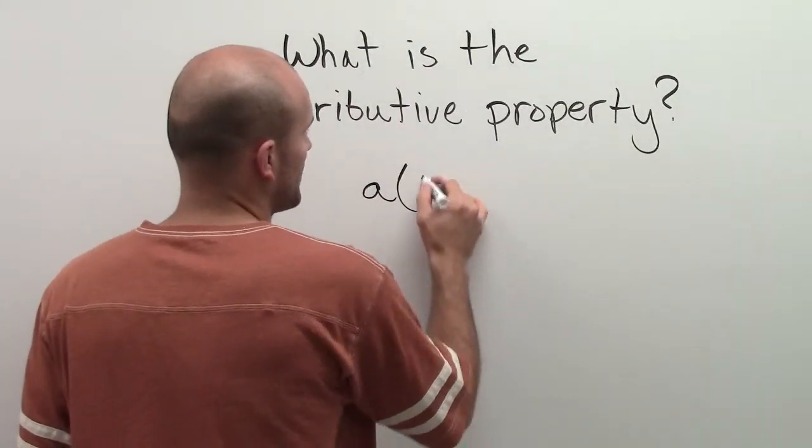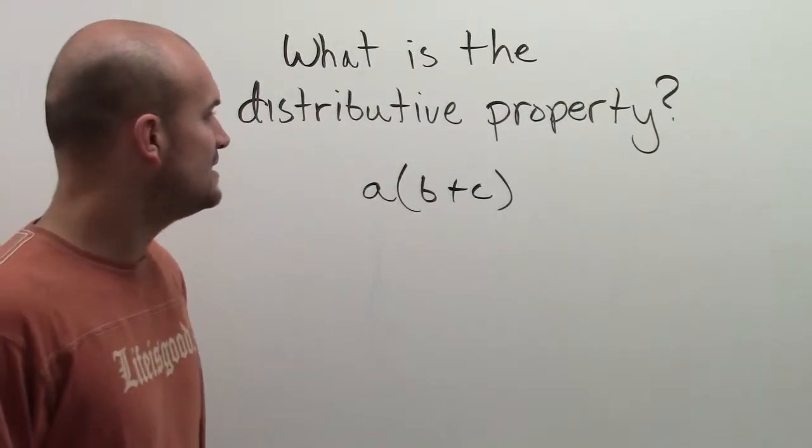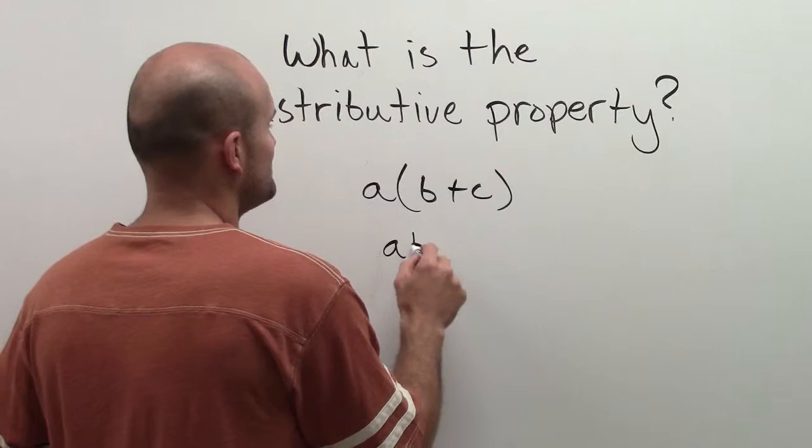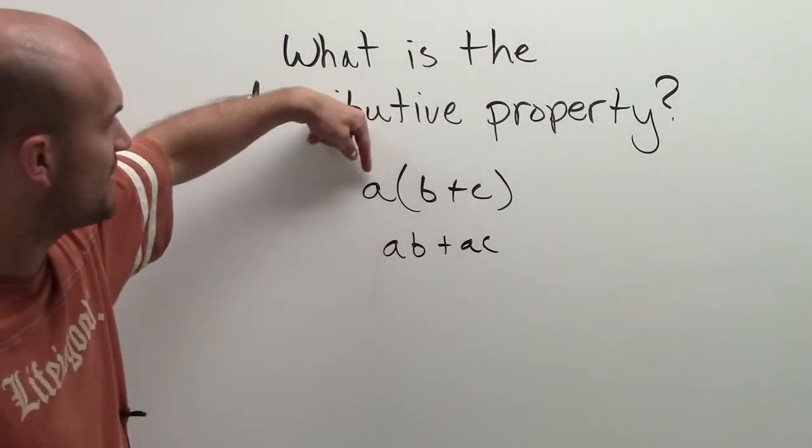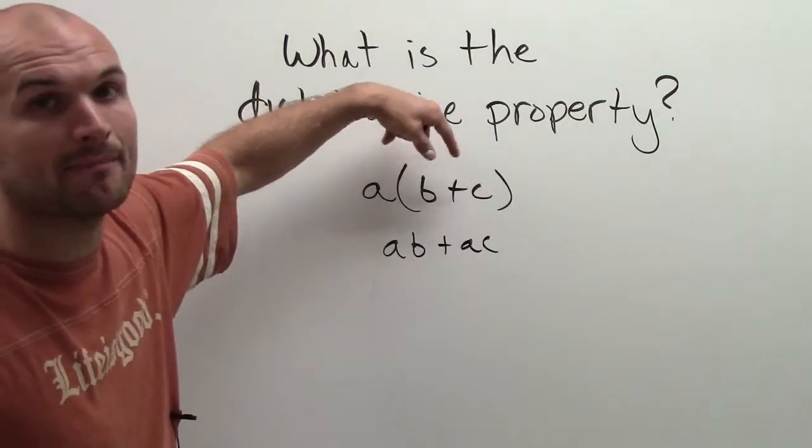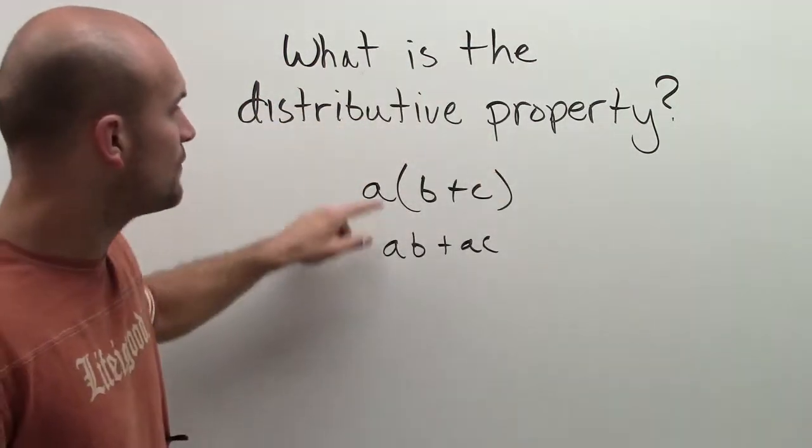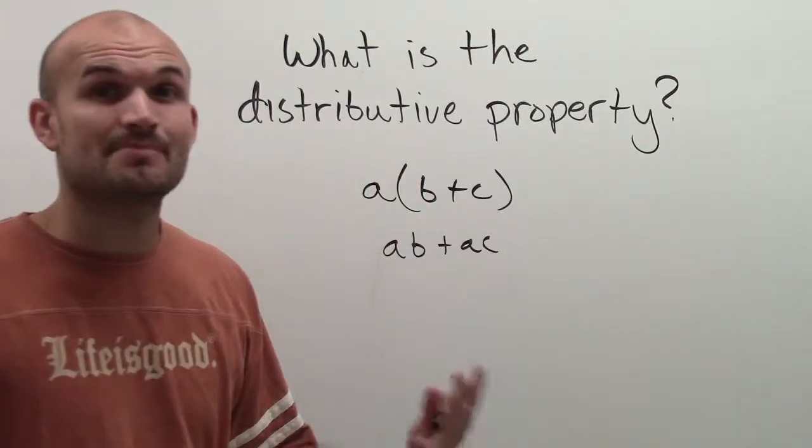So the main distributive property in the most common form states that a times, in parentheses, b plus c means that a times b plus a times c. Because what you can see is I have my variable. It's being multiplied by parentheses, inside the parentheses b plus c. So therefore, that means I need to multiply my a times my b and my a times my c.